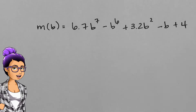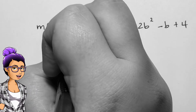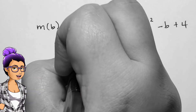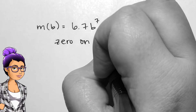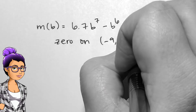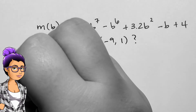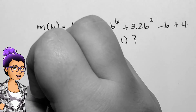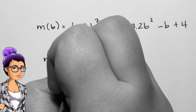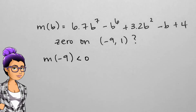Note that in certain cases we'll need to pay attention to whether the interval has parentheses or brackets. To use the theorem, I need to see where m of negative 9 is. Using my calculator to find it, I see that it's negative — very, very negative. Using my calculator again to find f of positive 1, I see this number is positive.